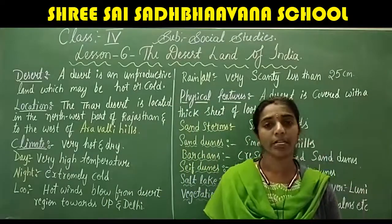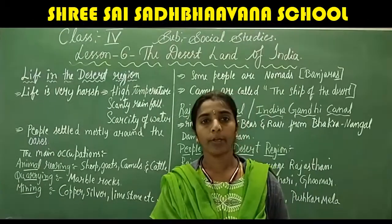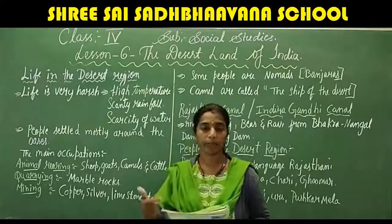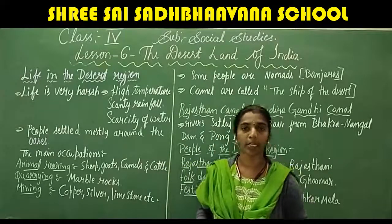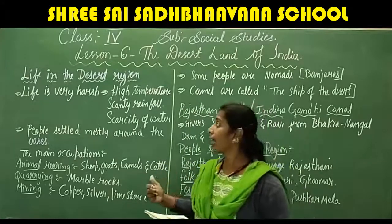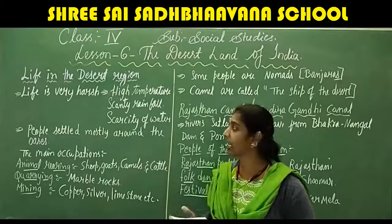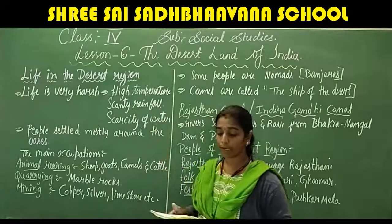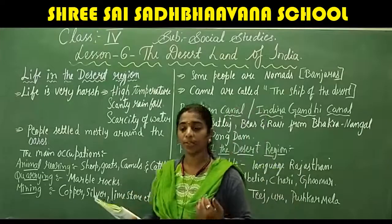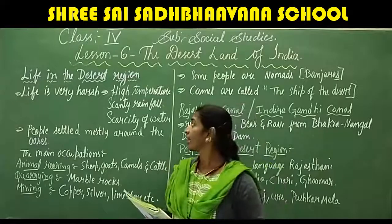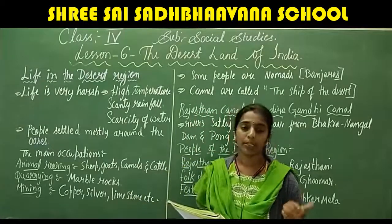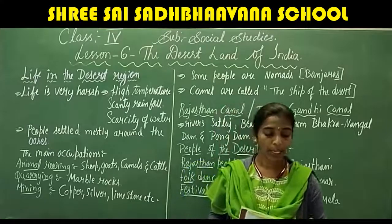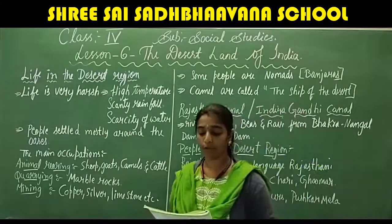Now let us study about life in the desert region. Life in the desert area is very harsh because of high temperature, scanty rainfall, and scarcity of water. Due to these adverse conditions, the population in the desert area is very low, as the absence of suitable living conditions affects population distribution.